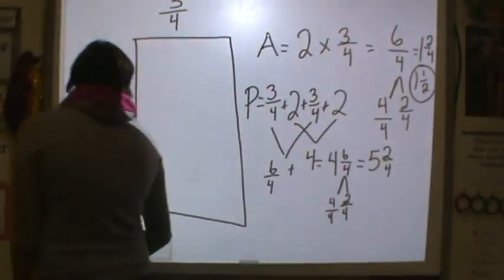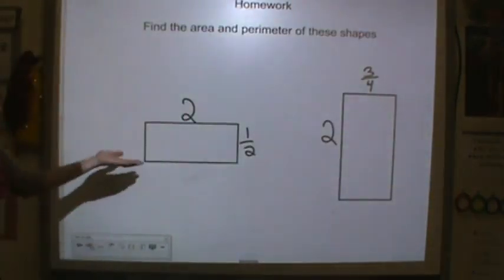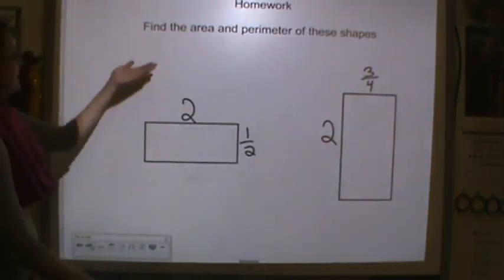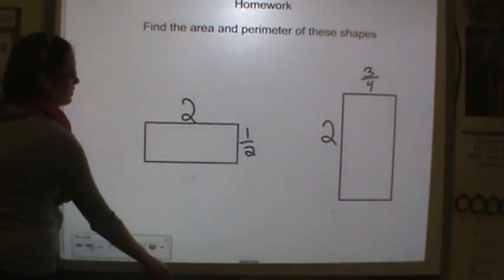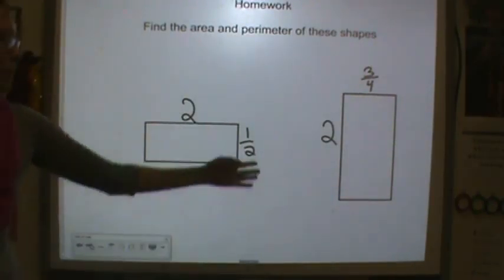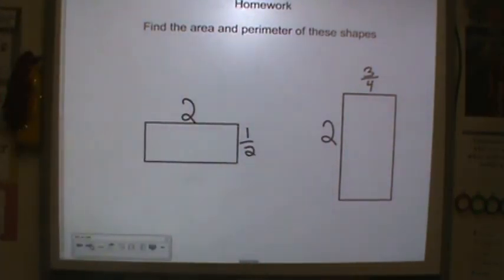All right, this is a quick video for homework. Here's what I'd like you to solve: find the area and perimeter of these two shapes. All right, and that one should be really easy because we just did it, but I want you to practice it again. We'll see you tomorrow.